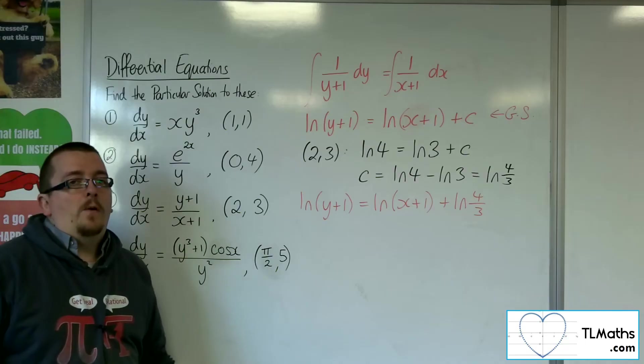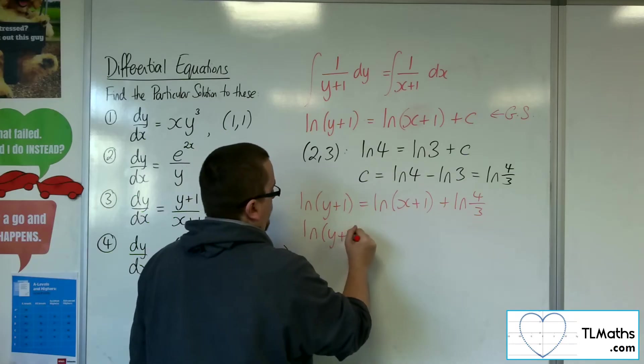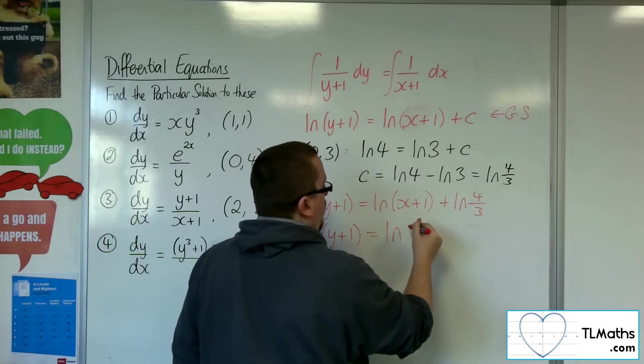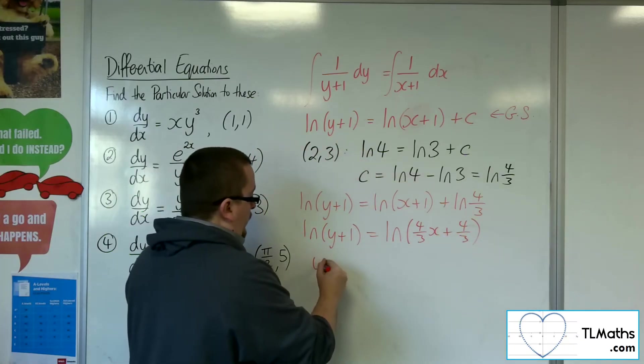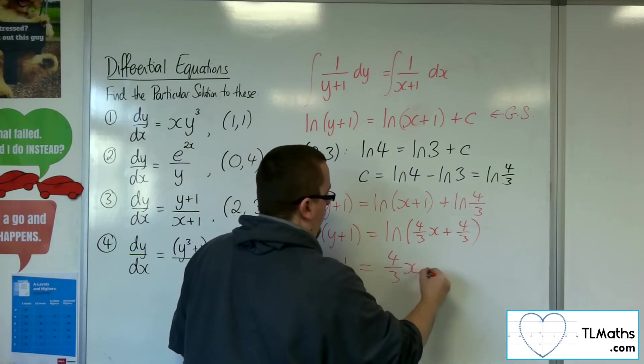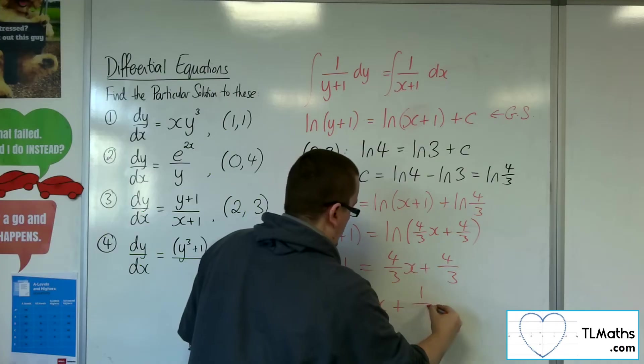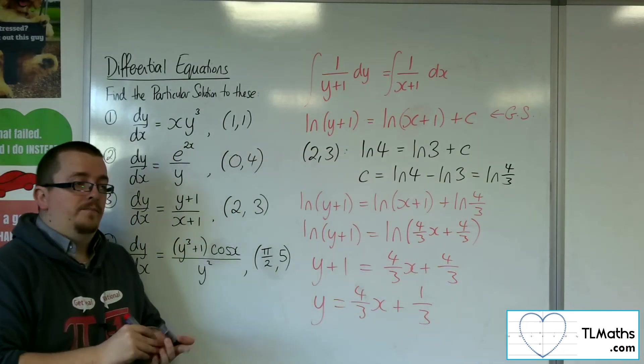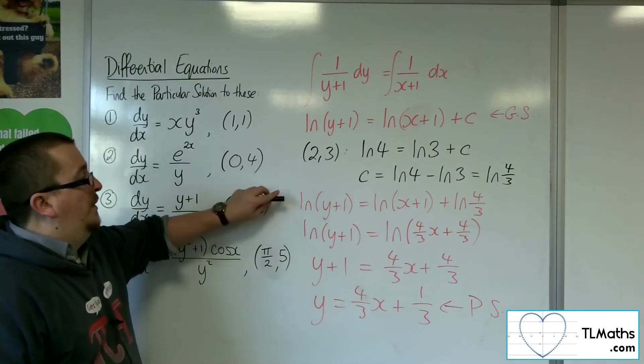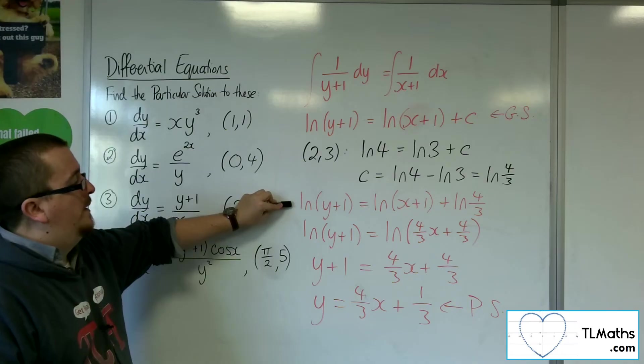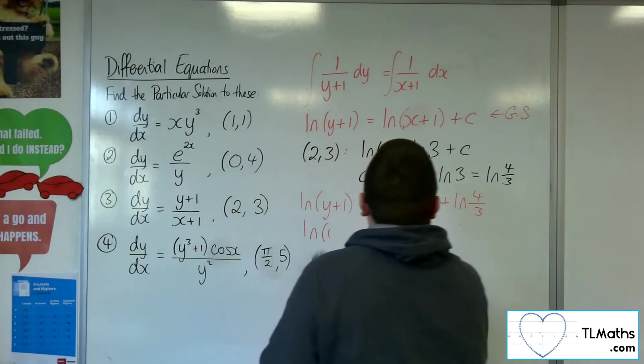Now, what I'm seeing there is I really want to go ahead and simplify this now, because I can combine those two logarithms using log laws. So that's log of 4 thirds times x plus 1, so 4 thirds x plus 4 thirds. Then, I can get rid of the logs, so it just leaves me with y plus 1 equals 4 thirds x plus 4 thirds. Then, take the 1 from both sides, and I get y equals 4 thirds x plus 1 third. So that is a simplified version of the particular solution for the problem.